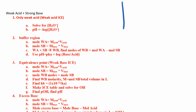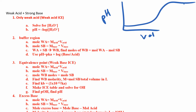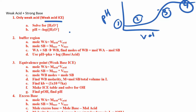For a weak acid and strong base titration, the curve looks pretty much the same — pH versus volume of base added — with four regions. Initially, all you have is a weak acid, so you set up a weak acid ICE table the way you usually do, solve for hydronium, and take the negative log to get your pH.